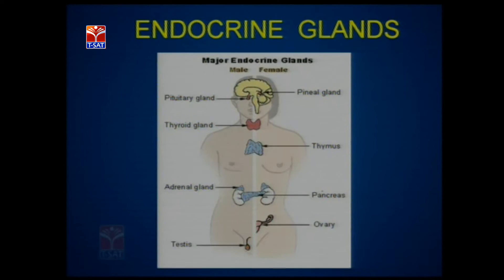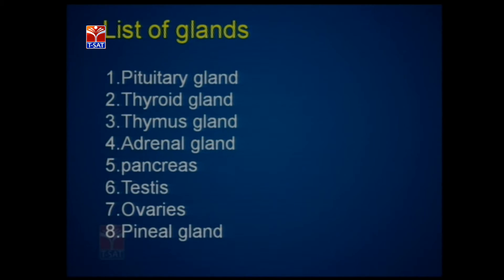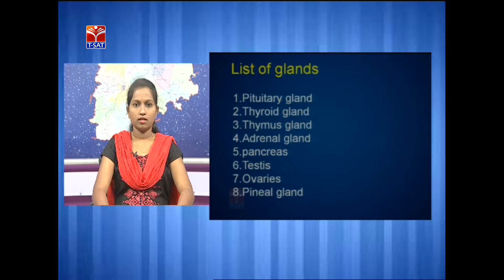Here are the major endocrine glands present in the human body. They include the pituitary gland, thyroid gland, adrenal gland, pineal gland, thymus gland, and pancreas. In the case of males, there are testes, and in the case of females, there are ovaries. The glands I am going to explain today are pituitary gland, thyroid gland, thymus gland, adrenal gland, pancreas, testes, ovaries, and pineal gland.